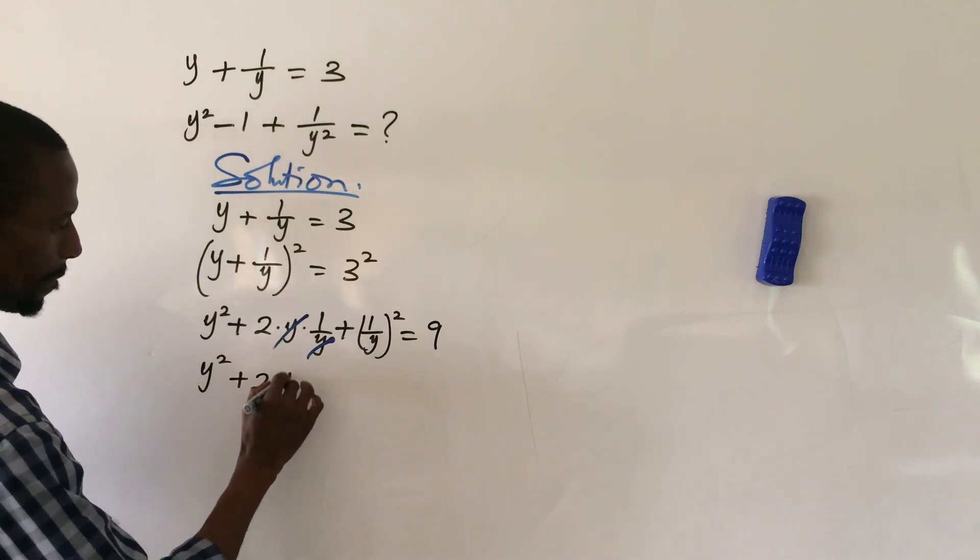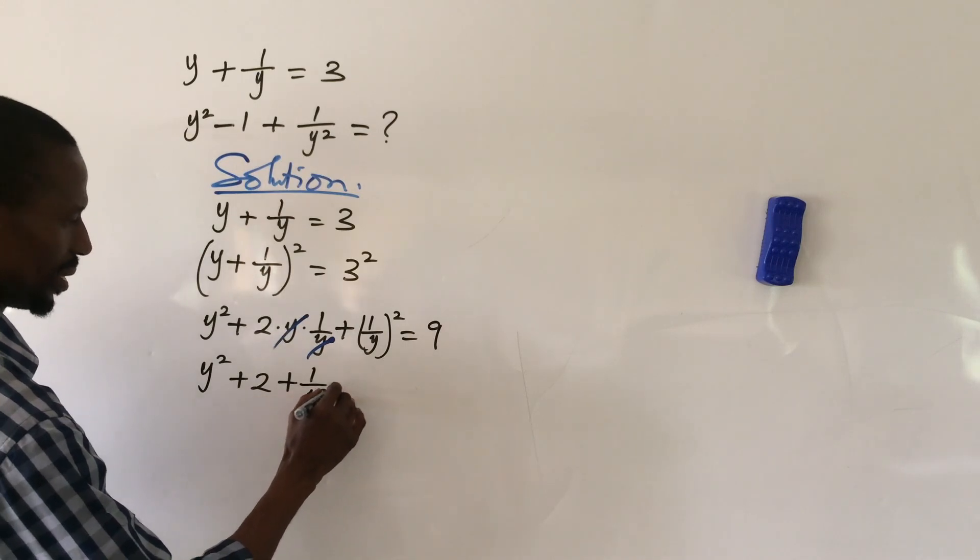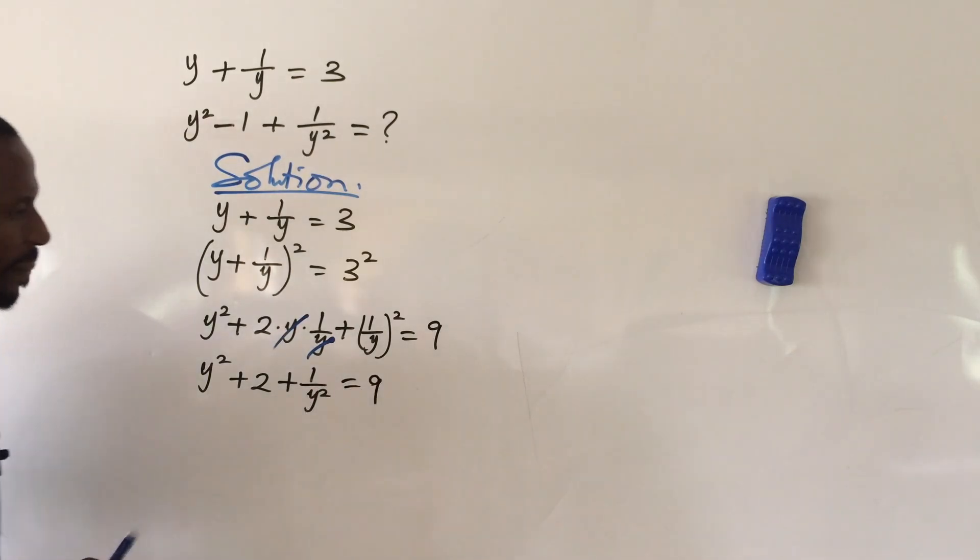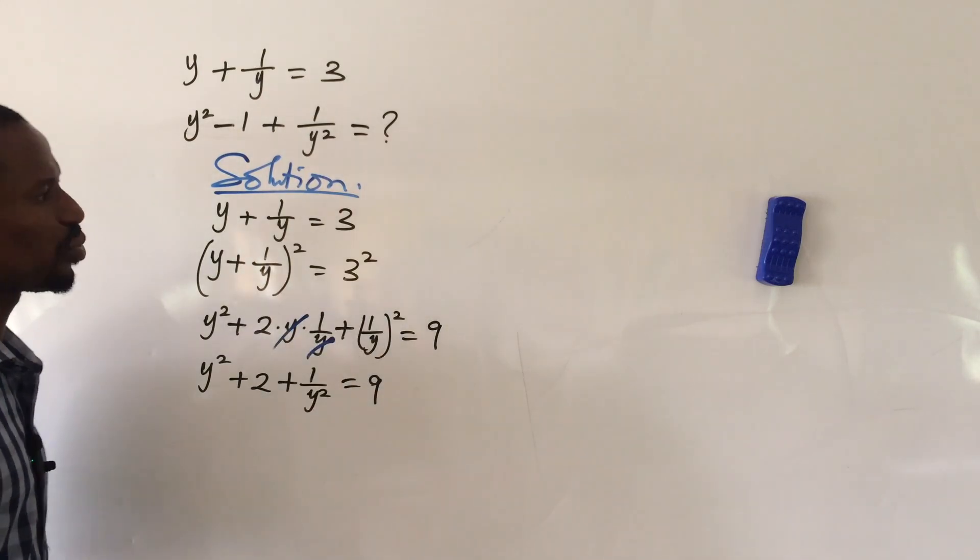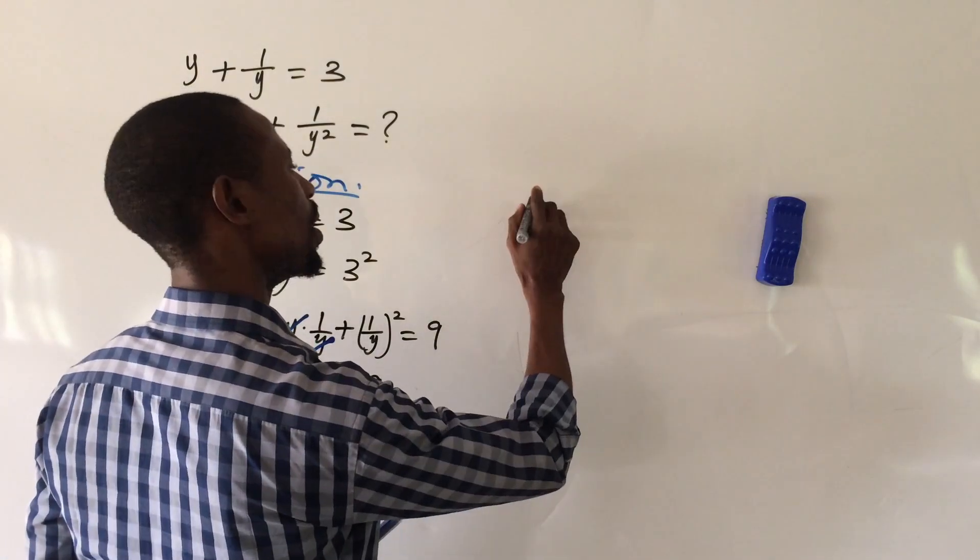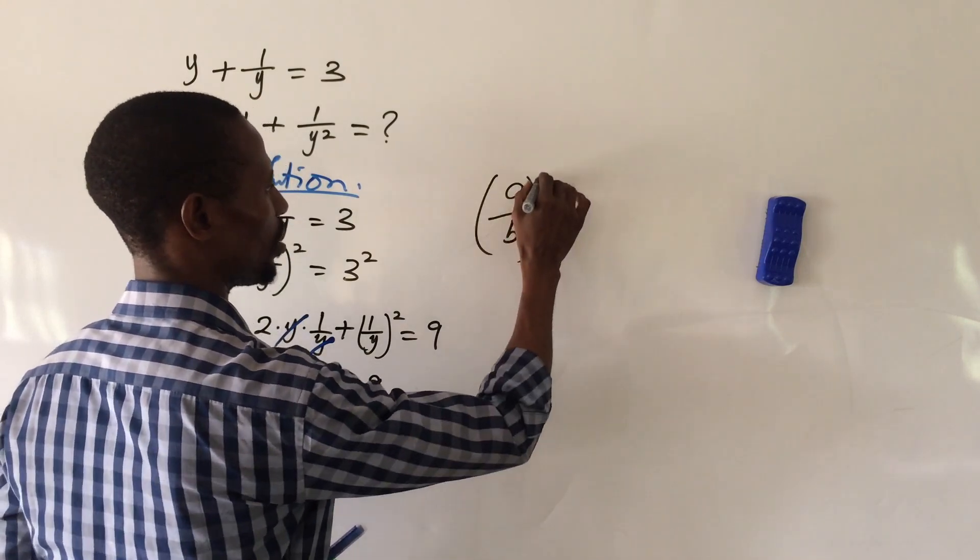Now what I just applied here is the law of indices, which is that if you have a over b all to the power of m, this is the same thing as a to the power of m over b to the power of m.